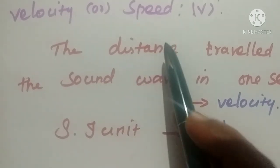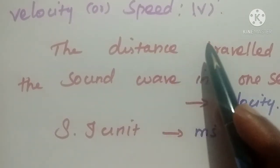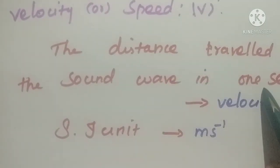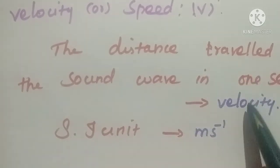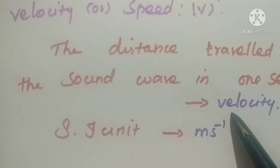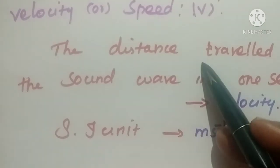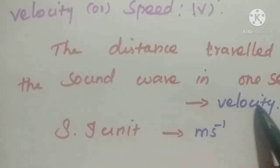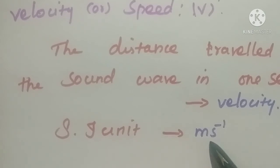The last characteristic is velocity or speed, represented by the letter V. The distance travelled by the sound wave in one second is called velocity. Distance divided by time is velocity. Here the distance is represented by wavelength, so velocity equals wavelength divided by time. The unit of velocity or speed is meter per second, or meter second power minus one (m s⁻¹).